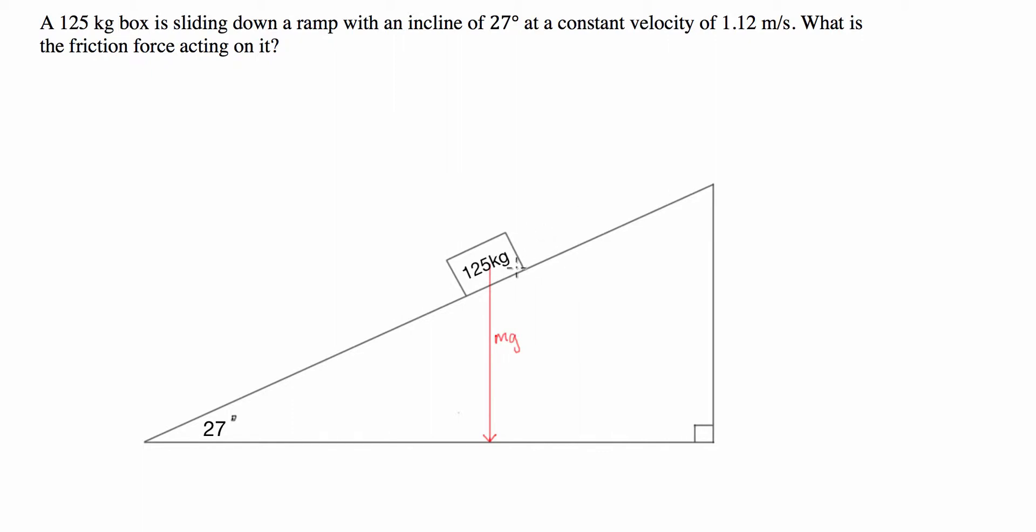The next force we have is what's called the normal force, or force normal to the plane. And that is a reaction force of the mass of the box. Because Newton said for every action there's an equal and opposite reaction. The box is pushing down on the slope, so the slope has to provide a normal force perpendicular to the slope, like such.